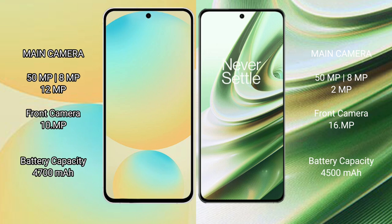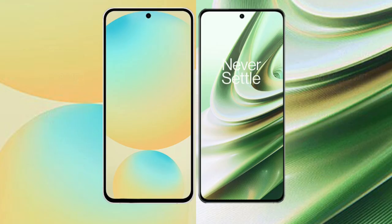The Samsung Galaxy S24 FE triple camera setup includes a 50MP main, 8MP ultrawide, and 10MP telephoto lens, with a 10MP front camera. The OnePlus 10R also has a triple camera with a 50MP main, 8MP ultrawide, and 2MP macro lens, and a 16MP front camera. The S24 FE packs a 4700mAh battery with 25W fast charging, while the OnePlus 10R has a 4500mAh battery with 150W fast charging.